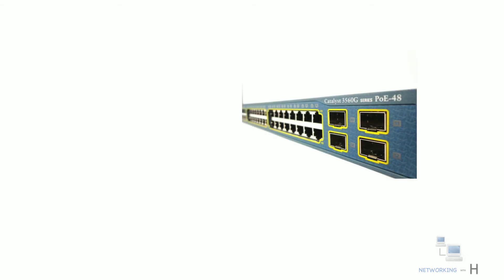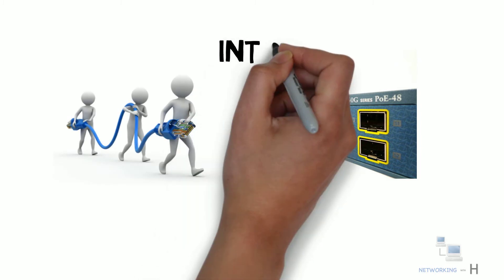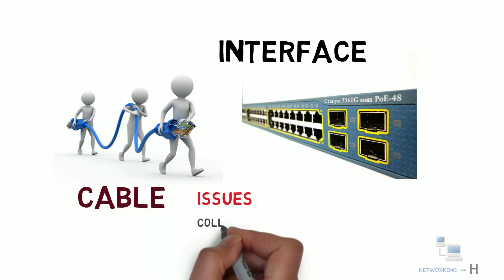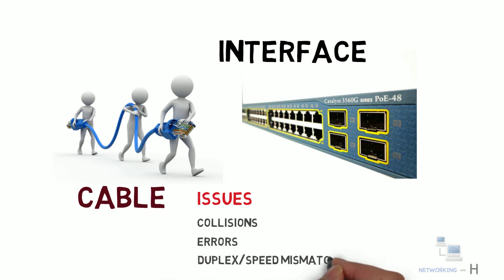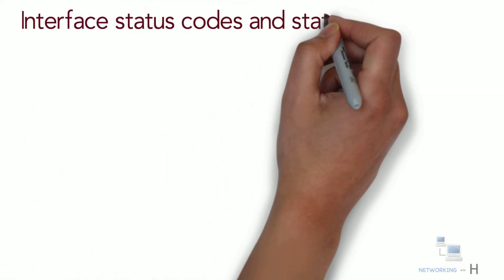Hello and welcome everyone. In my previous two sessions I have shown ways to configure and verify switch interfaces. In this session we look at interface and cable issues such as collisions, errors, and duplex and speed mismatch, and also more unusual cases in which the interface is working but not working well, as revealed by different interface status codes.